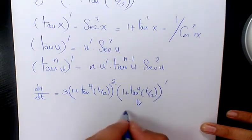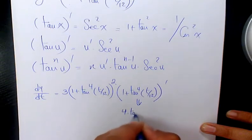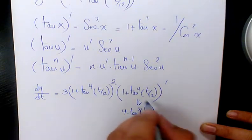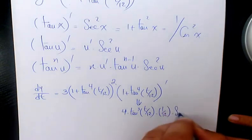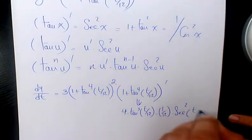Derivative of this part is going to be 4 times tan to the power of 3 t over 12, times 1 over 12 secant squared t over 12.